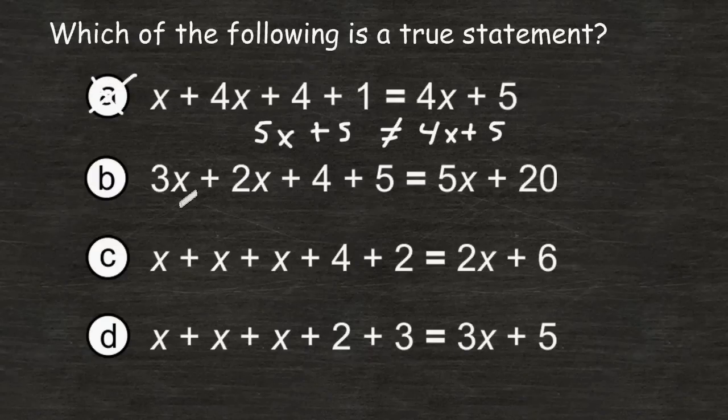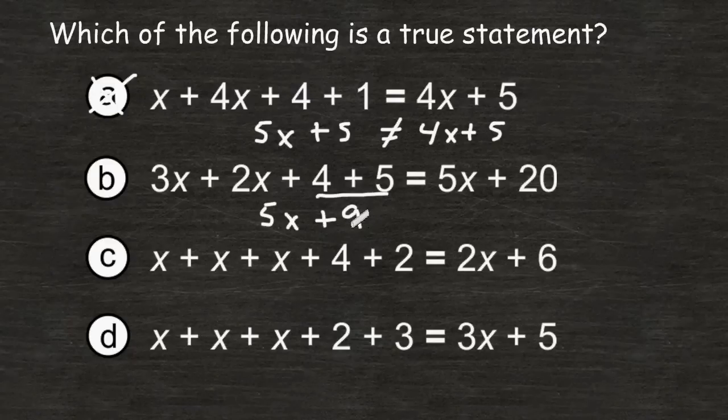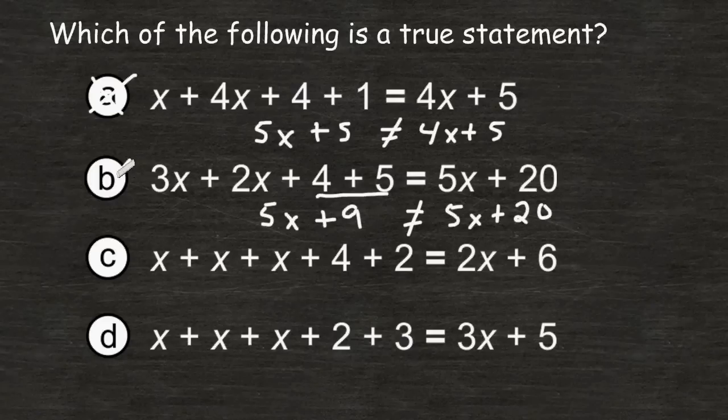For choice B, we are going to simplify everything on the left by combining the terms 3x plus 2x which is 5x and combining 4 plus 5 which is 9. And 5x plus 9 is not equal to 5x plus 20. So we may eliminate choice B as well.